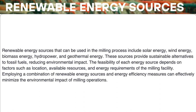There are several types of renewable energy that can be used in the milling process to reduce reliance on fossil fuels and mitigate environmental impact. Some of these renewable energy sources include: 1. Solar energy. Solar power can be harnessed through photovoltaic (PV) panels or solar thermal systems. PV panels convert sunlight directly into electricity to power milling equipment. Solar thermal systems use the sun's heat to generate steam, which can drive turbines for mechanical milling processes. 2. Wind energy. Wind turbines can generate electricity by harnessing the kinetic energy of the wind, providing a sustainable source of energy for milling operations.